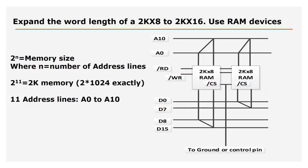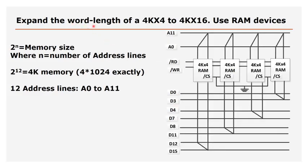Let's look at the next example. This question says: do a word length expansion by making use of 4k by 4 devices and expand to a 4k by 16. Immediately I can see this 4k by 4 device only outputs 4 data bits, so in order to get to 16 data bits I'll make use of 4 of these 4k by 4 devices. Generally you won't get a device by 4 in practice — this is a theoretical question. Don't be surprised in an exam if you get something like a by 6 or by 14. Because these are RAM devices, you connect all your read lines together and all your write lines together — if it were ROM devices, the write line would not be present.